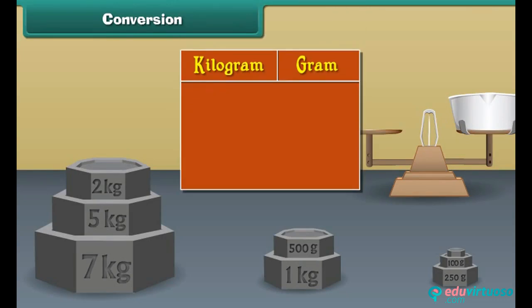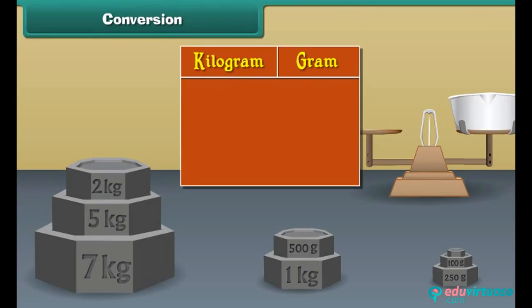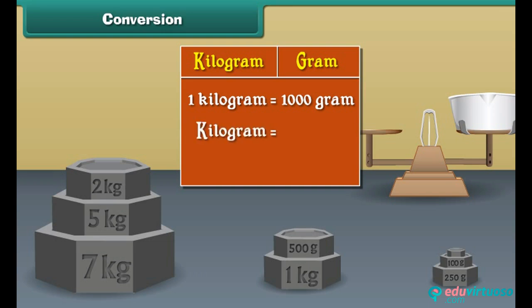The words kilogram and gram are used to express weight. One kilogram is equal to 1000 grams. Kilogram is also represented as kg. Gram is also represented as g.